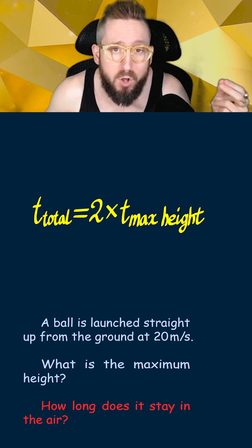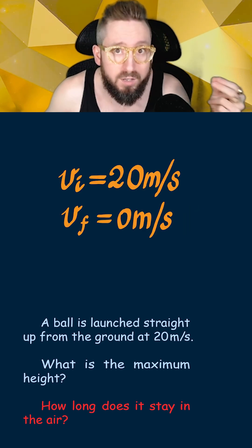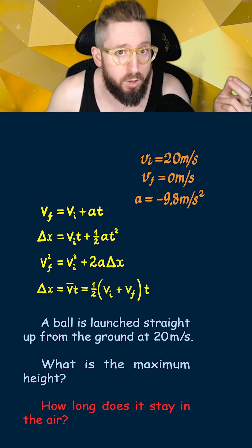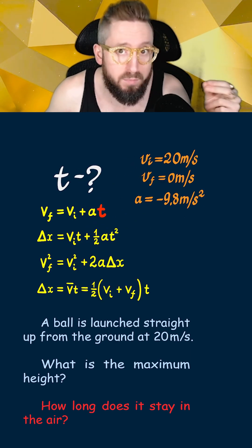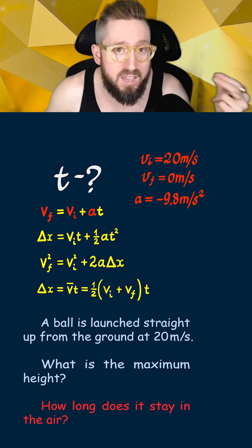So solving for the time it takes for the ball to reach the maximum height, we know the initial velocity, the final velocity, and the acceleration due to gravity. Looking at our formulas, the only one that has what we're solving for, time, and what we're given, initial velocity, final velocity, and acceleration, is this first one.